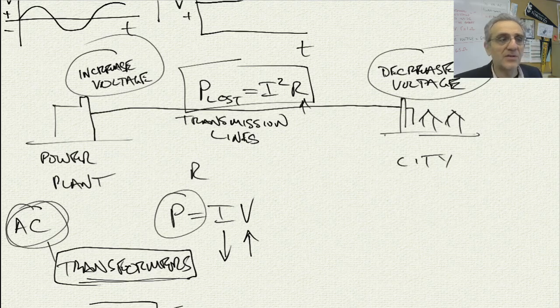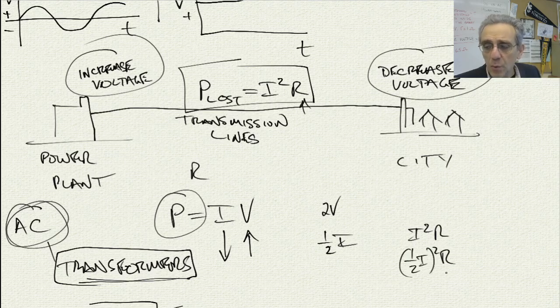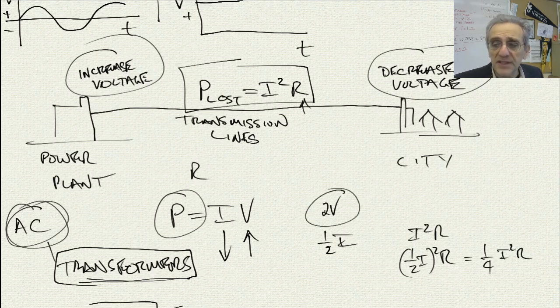And that's what allows efficient use of power transmission. Just to clarify, think about what happens if we double the voltage. If you double the voltage, then you have the current. And if you have the current, what's the power loss? Well it's I squared R, but now it's one-half I squared R, which is essentially one-quarter I squared R. So if you double the voltage, you only lose a quarter of the power in the transmission.